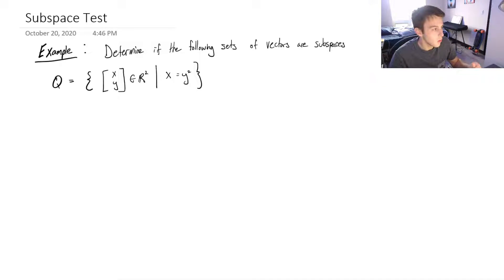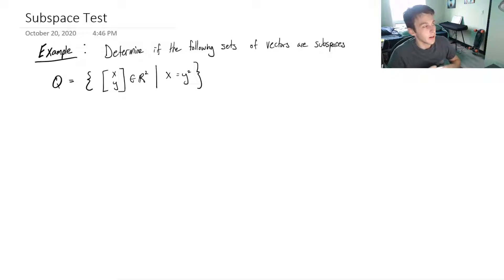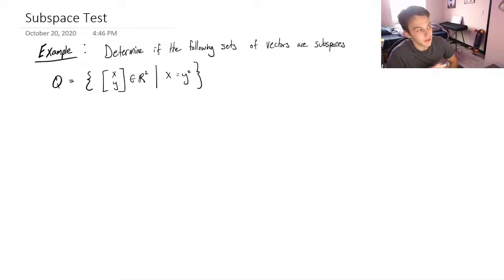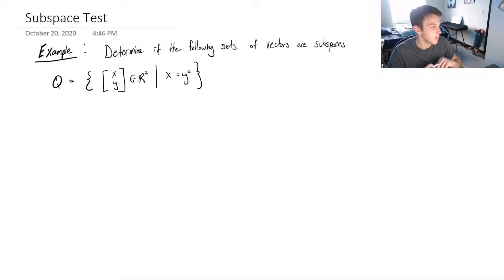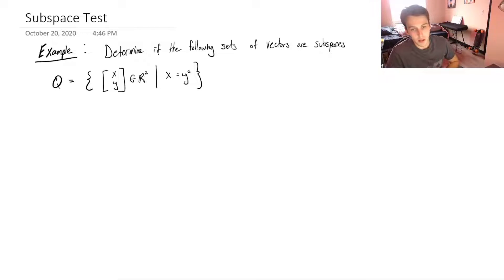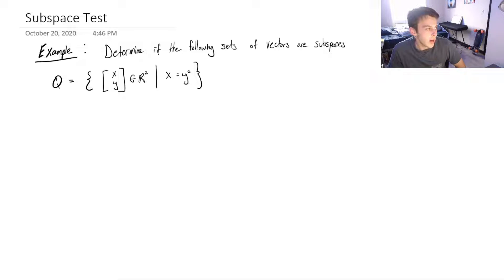Hey guys, in the last video we talked briefly about what a subspace is, and we talked about the subspace test and how those properties work geometrically. But we didn't actually do any applications of the subspace test with computations that you're likely to see in a course like linear algebra. So this video assumes you already have a baseline knowledge of what the subspace test is, and we'll be applying it to a couple different examples.